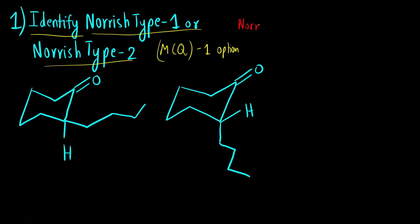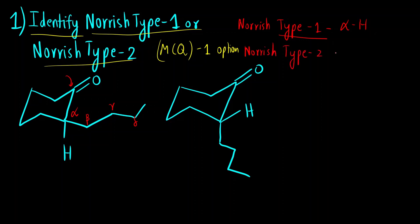For Norrish type 1, the alpha hydrogen is abstracted. What is the meaning of alpha hydrogen? This is the alpha carbon — the carbon next to the functional group is alpha, then second is beta, gamma, delta and so on. For Norrish type 1, alpha hydrogen is abstracted, and for Norrish type 2, gamma hydrogen is abstracted.